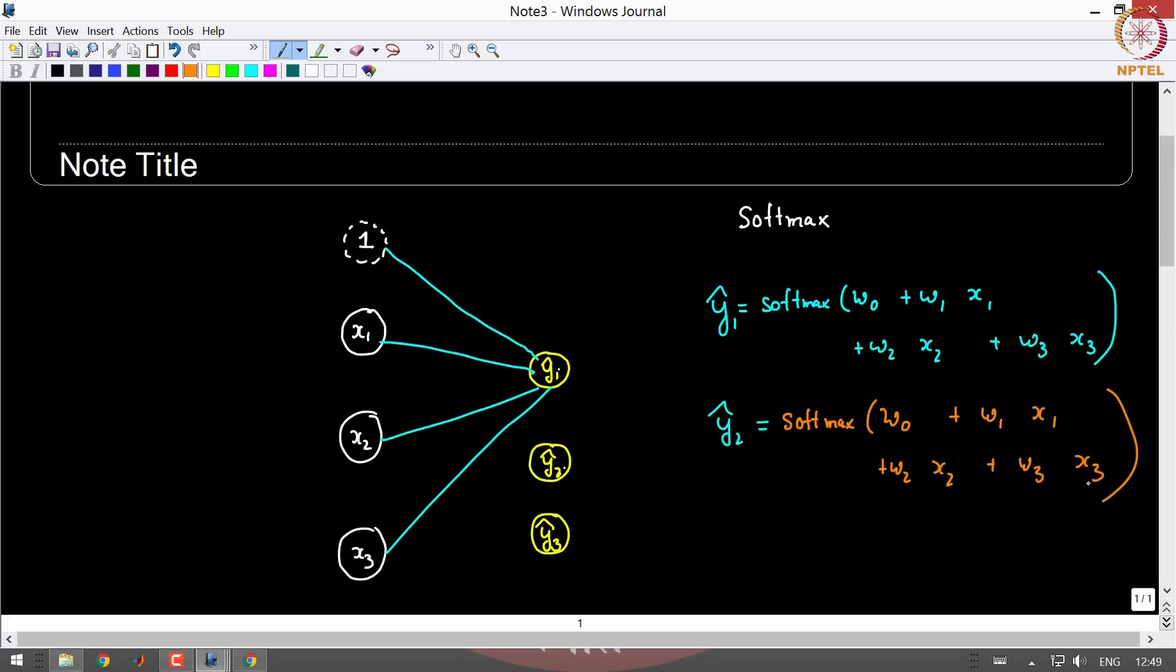Now suppose this W0, W1, W2, W3 were the same in both these cases. Obviously you are going to get the same Y1 hat as well as Y2 hat because otherwise the functions are identical. So this is not a good idea. So you need different weights. So we are going to use different weights here.